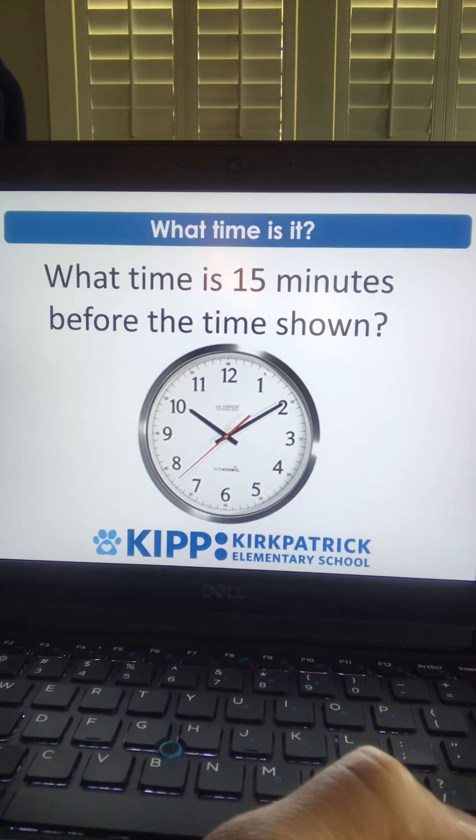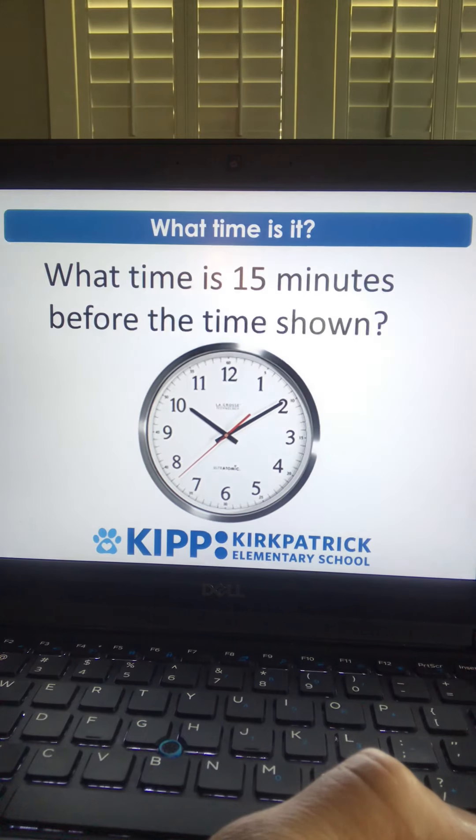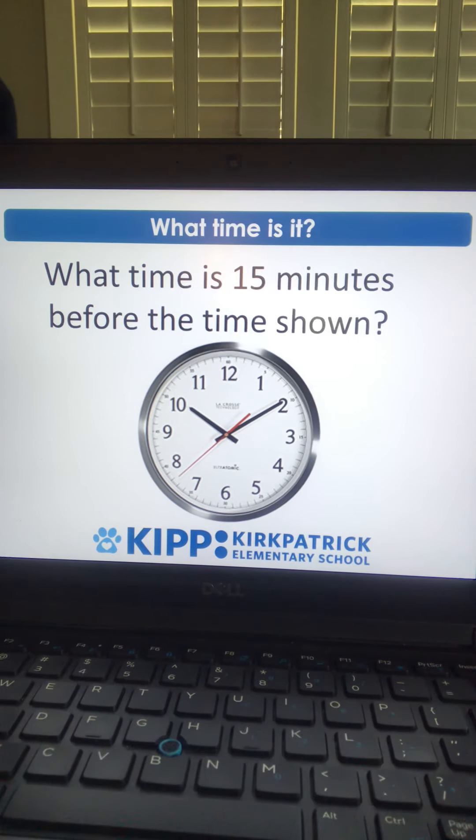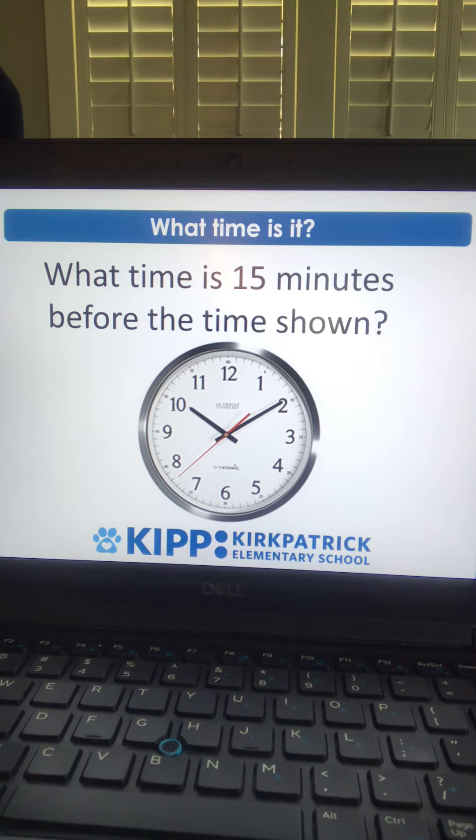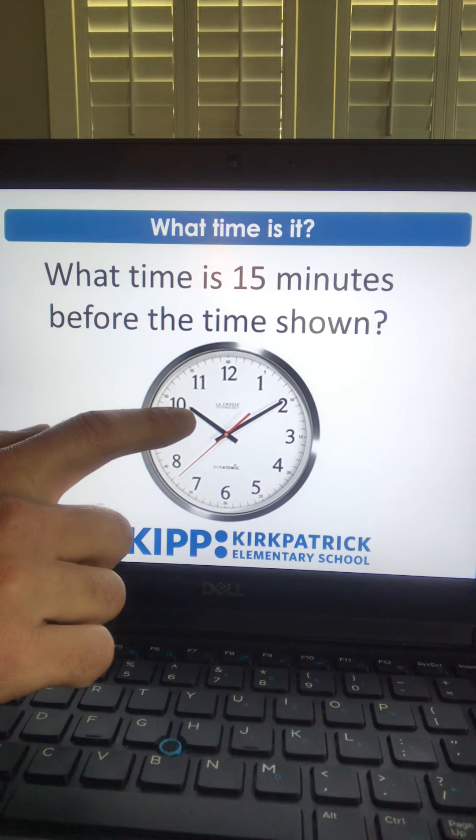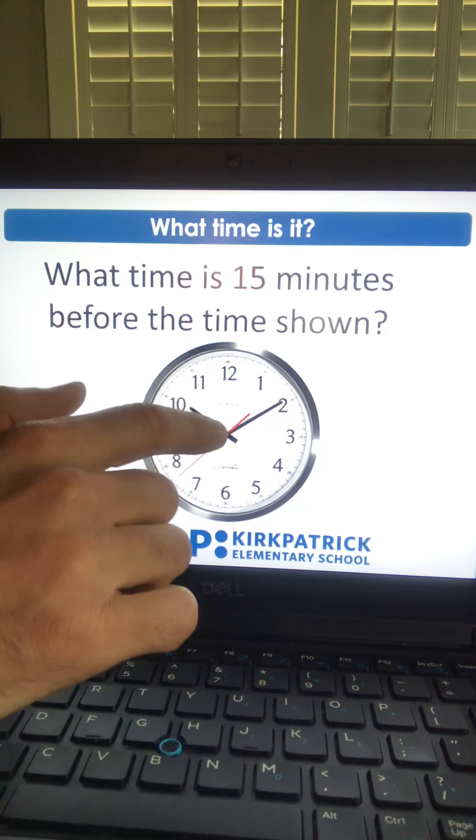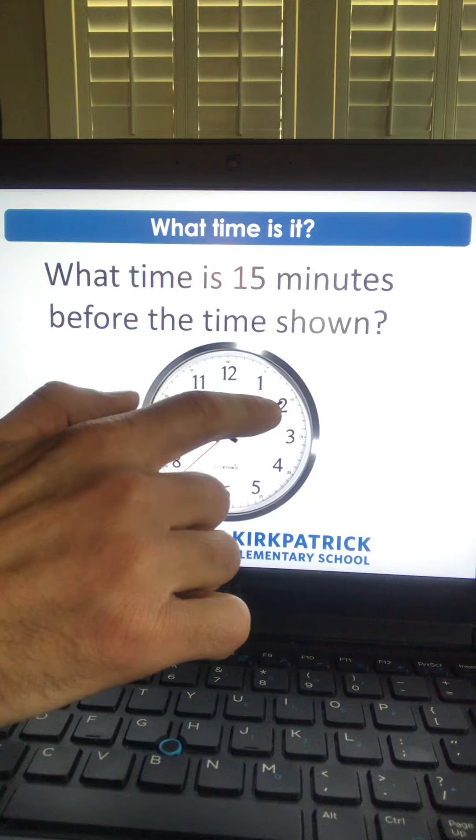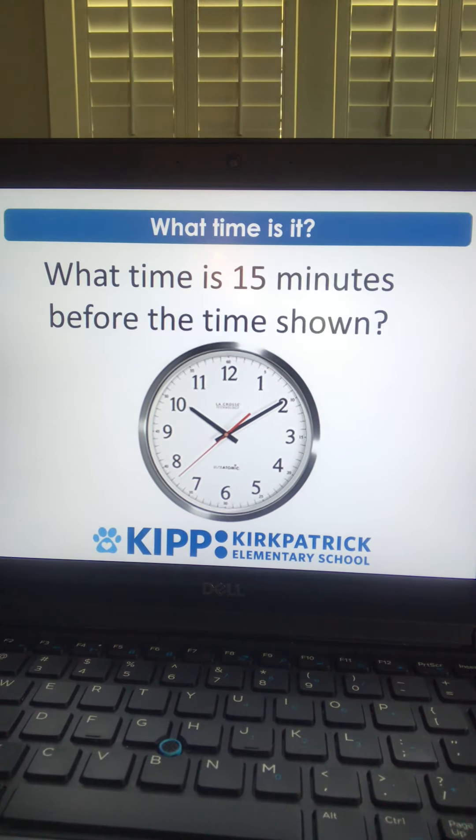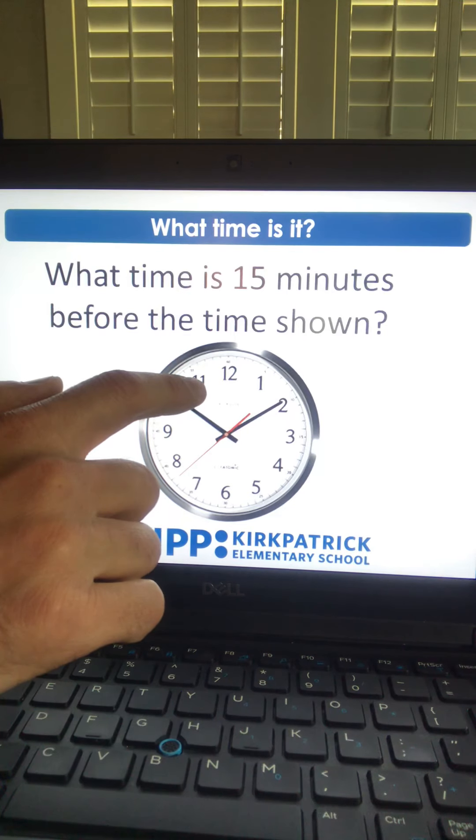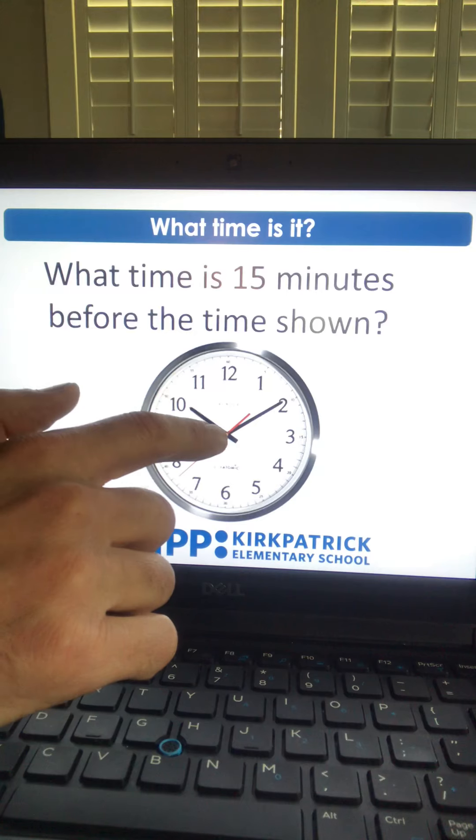And here's our last problem today for our math routines. It says what time is 15 minutes before the time shown? So the first thing you should ask yourself is what time is it currently shown on the clock? You'll notice that the hour hand is a little bit past the 10 and the minute hand is on the 2, so the time that's currently shown on the clock is 10:10. But my problem asked me what is 15 minutes before that time. That's kind of tricky.